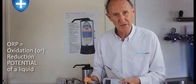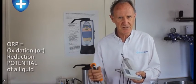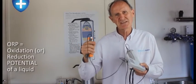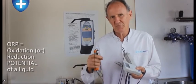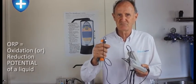Now ORP is a measure of the oxidation or reduction potential of a liquid, which really is only a measure of the potential. ORP means oxidation reduction potential.